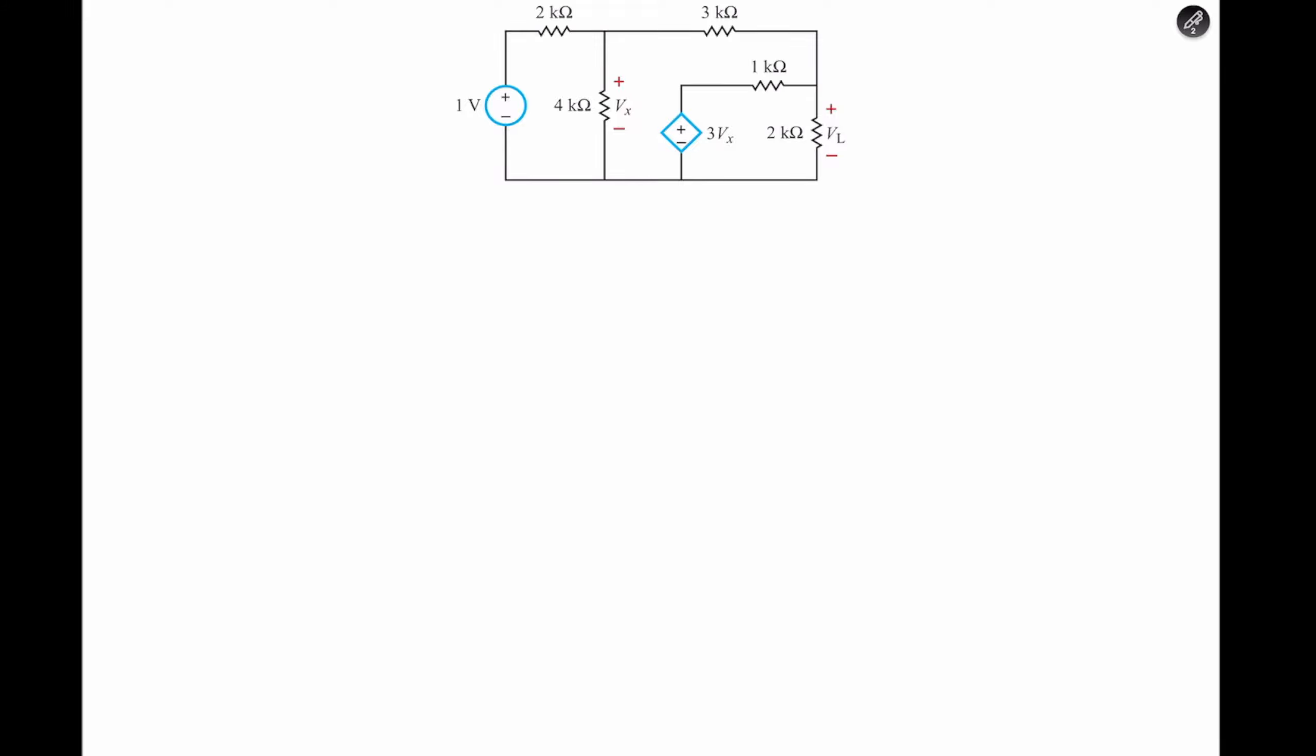So nodal analysis seems to be the best method. In this case, this terminal connects the Vx, or the 4kohms, the 3kohms, and the 2kohms. And it seems to connect a good amount of components, so that would be a good terminal to choose. But if you want to know Vl, we definitely want to know the voltage at that terminal. So we have two unknowns and two equations.